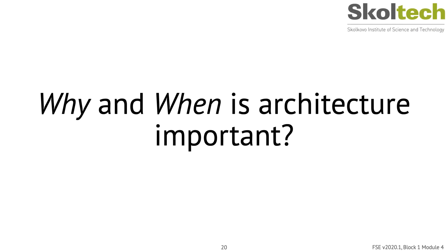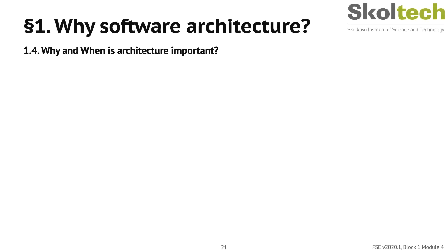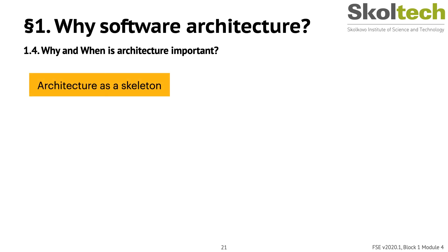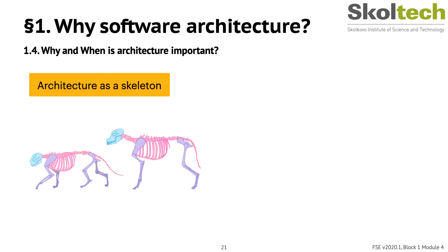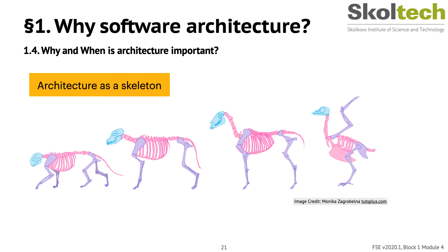One question arises: when do you need architecture, and why is it important in one project but less important in another? Architecture acts as a skeleton of the system. The metaphor is intended to describe how a skeleton provides the overall structure for an animal and influences what it can do. Most fast animals have four legs, birds are good at flying, and kangaroos are good at jumping, largely because of their skeletons. You cannot say, however, that one skeleton is better than another.